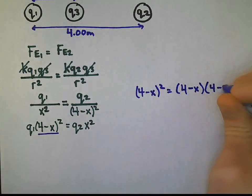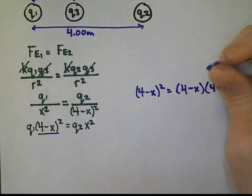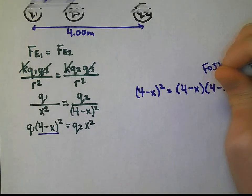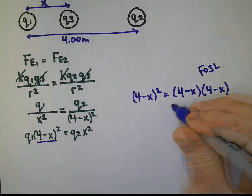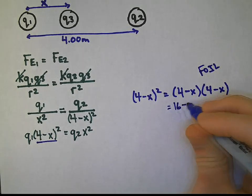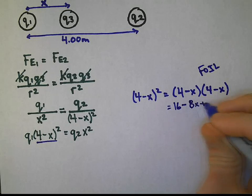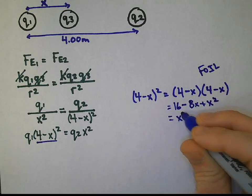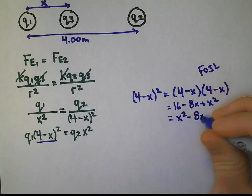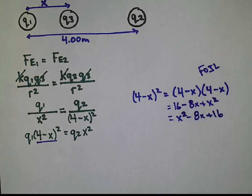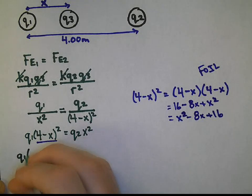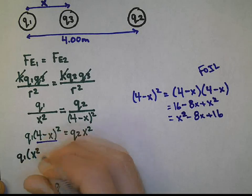And remember this 4 minus x squared is the same as saying 4 minus x multiplied by 4 minus x. So binomial expansion, some people know it as FOIL, will get us 16 minus 8x plus x squared. And we're going to rearrange it so that will be x squared minus 8x plus 16. This gives us Q1 multiplied by x squared minus 8x plus 16 is equal to Q2 x squared.